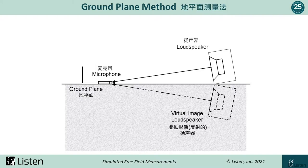Another method is called a ground plane measurement, and it is another inexpensive alternative to an anechoic chamber if a large flat surface is available, such as a parking lot — again, weather permitting. The ground plane acts as an image source or mirror and theoretically doubles the level by 6 dB compared to a free-field measurement because it appears as if there are two identical loudspeakers. This works well for simulating floor-standing or stacked pro audio loudspeakers, but creates high-frequency reflections and boosts the mid-frequency bass due to the doubling of the cabinet size.